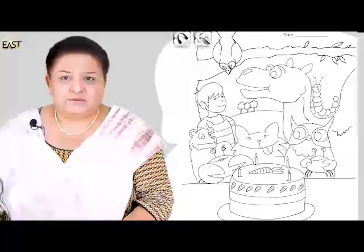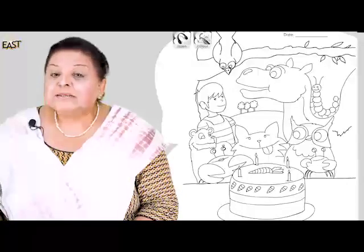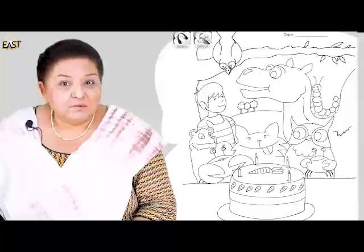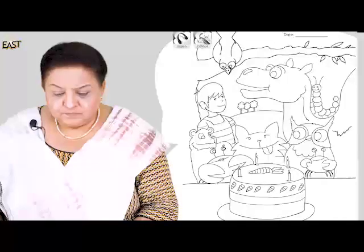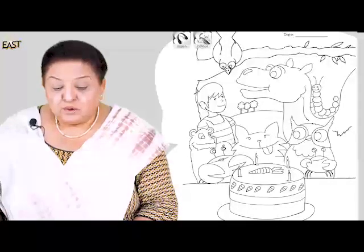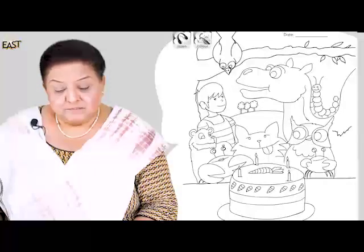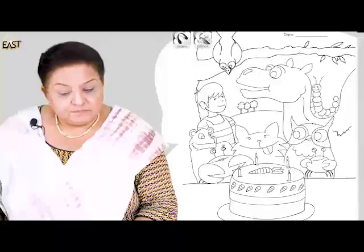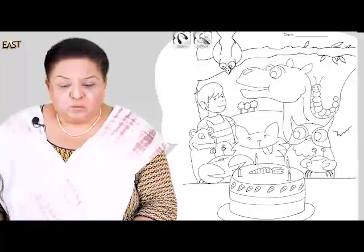Main aapko bahut achi story sunaata hun. Chalein, all right. Now, Ahmad and an owl decided to go to a park. Ahmad — woh jo bacha hai — aur owl, unhone socha ke hum aaj park chalte hain. They asked cat and crow to join them. Unhone poocha cat aur crow se: tum dono hamare saath chalna chahoge? Camel said, I want to go as well. Camel ne kaha, main bhi jaana chahta hun aapke saath.